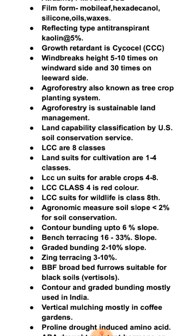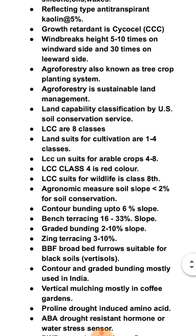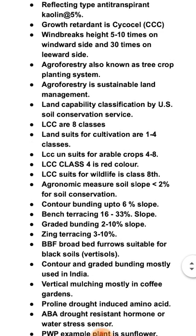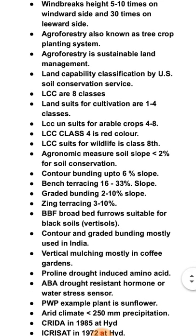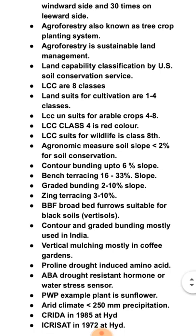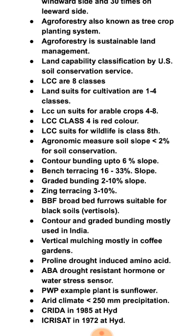Agronomic measures: soil slope less than 2% requires no special conservation. Contour bunding is used up to 6% slope. Bench terracing is used for 16 to 33% slope. Graded bunding is for 2 to 10% slope. Zingg terracing is for 3 to 10% slope. Broad bed and furrows are suitable for black soils.